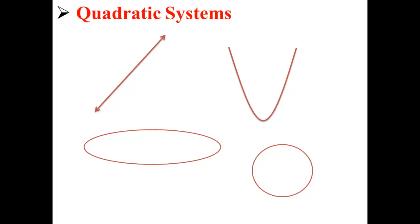Here we have some graphs of some quadratic equations. We have, for example, a line, a parabola, an ellipse, and a circle.